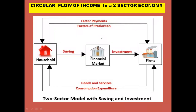In a two-sector economy we consider households and firms. In the outer loop, households supply factors of production to the firms — for example, land and labor flow from households to firms. In return, firms make factor payments which flow from firms to households. Households then do consumption expenditure, spending money on goods and services produced by firms, so money flows from households to firms.